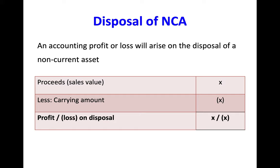To start with the simplest things first: how to calculate the profit or loss on the disposal of a non-current asset. The formula is proceeds — that is the sales value — minus the carrying amount. A positive figure will be a profit and a negative figure would be a loss on disposal.